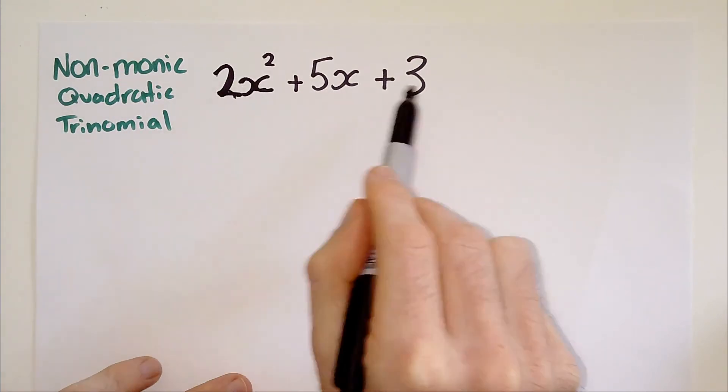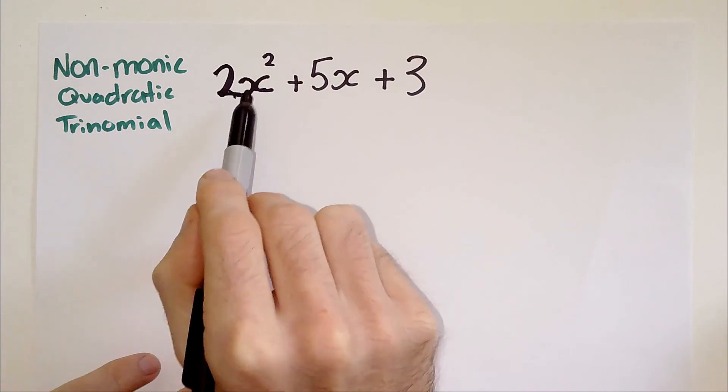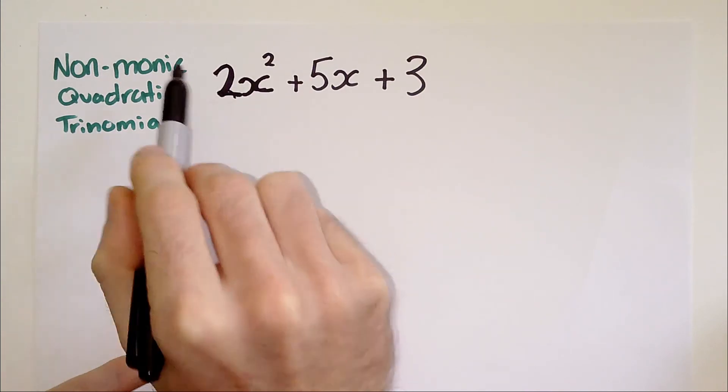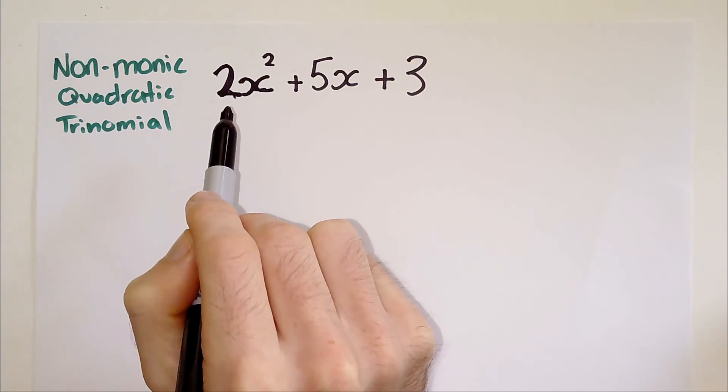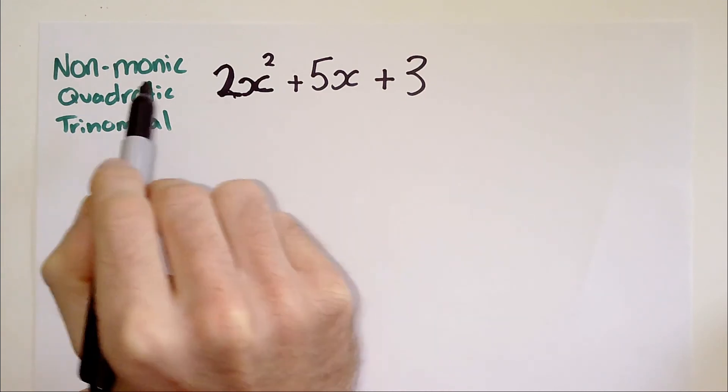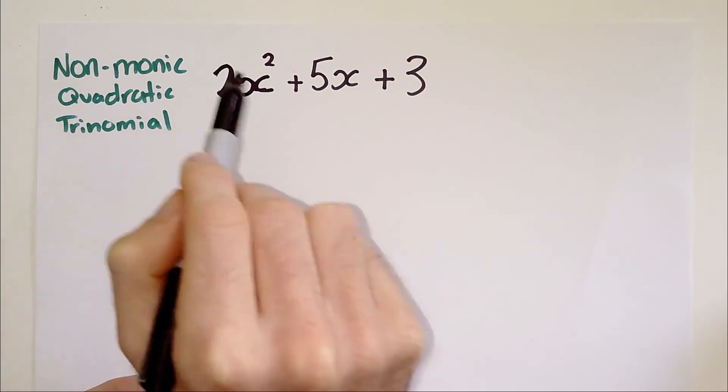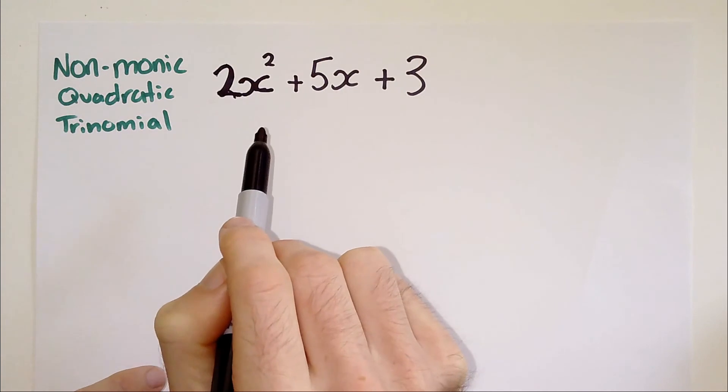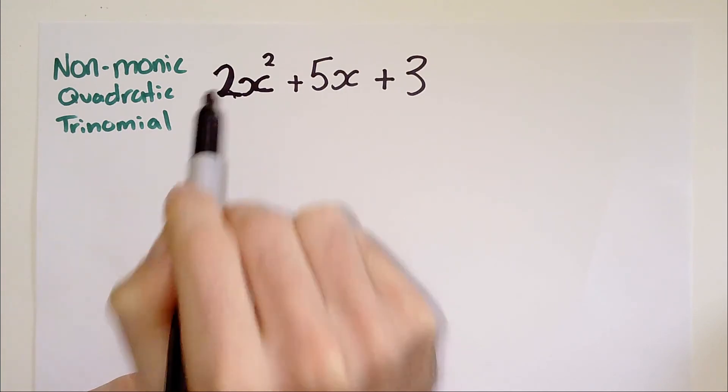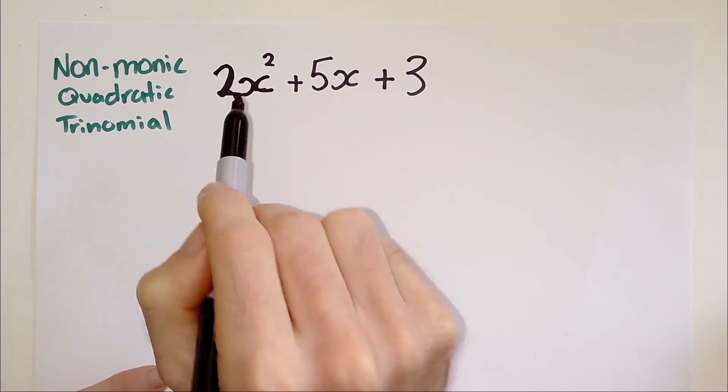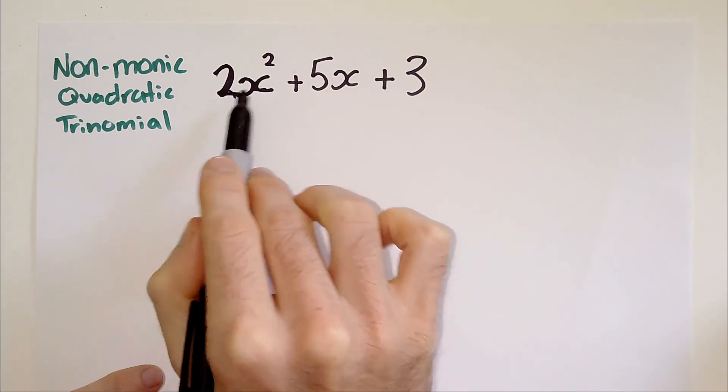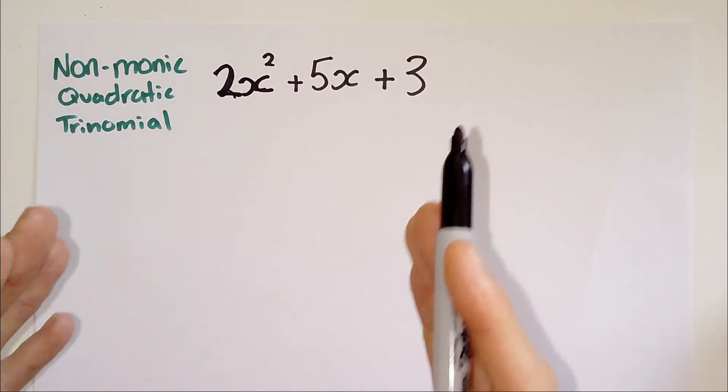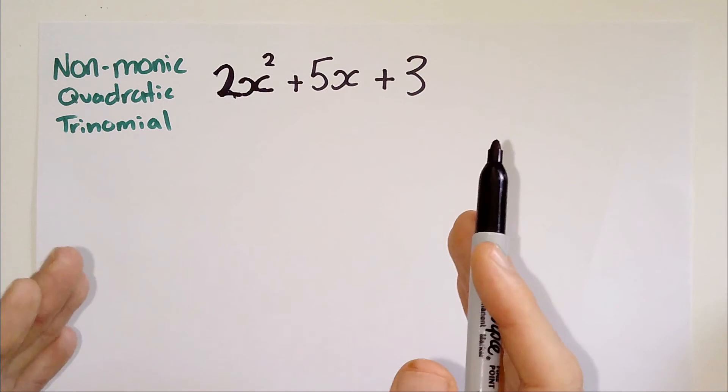We're not talking about any of these terms, we're talking about the x squared term. So non-monic means there is a number other than one, including negative one as well, because you would just factorize the negative out to leave positive one in the brackets. But non-monic, we're talking about two, three, four, negative two, negative three, anything other than one in front of that x squared.